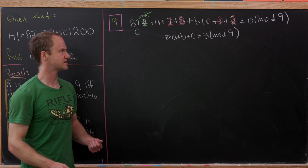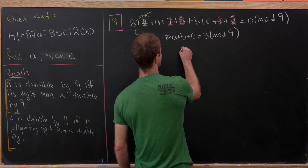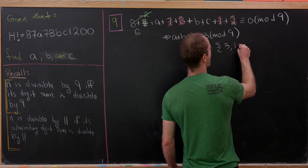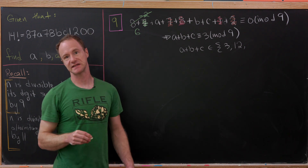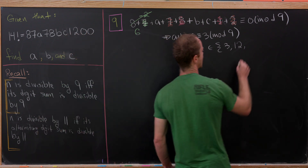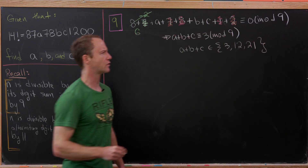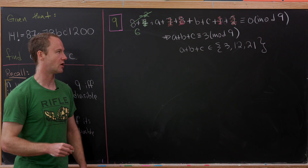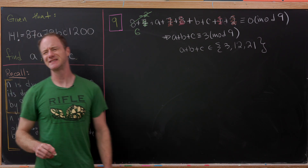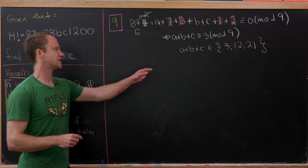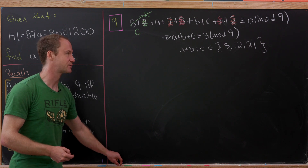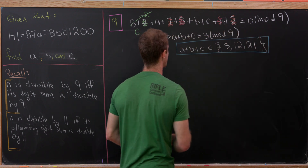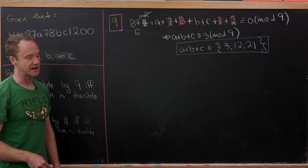That gives us some possible values for A + B + C. It could be 3, or 12 (which is 9 + 3), or 21 (adding 9 again). It couldn't be 30 because that would require A, B, and C to all equal 10, but since these are digits of a base-10 number, they're between 0 and 9. So our first condition is: A + B + C ∈ {3, 12, 21}.